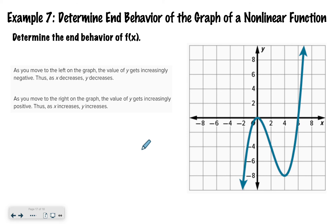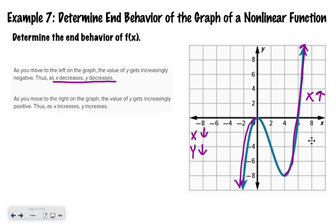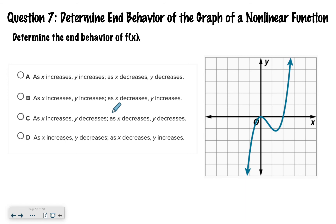Let's move on to our last example for today. It's the same idea but this time it's not a straight line. Looking at the left side, as x decreases, my y value is also decreasing. Then leading up to the right arrow, as x increases, y is also increasing. So as x decreases, y decreases, and as x increases, y increases — same idea, just a different shape. Hopefully you said letter A. If you have questions about this or anything else from this video, please ask for help. I hope you have a great day!